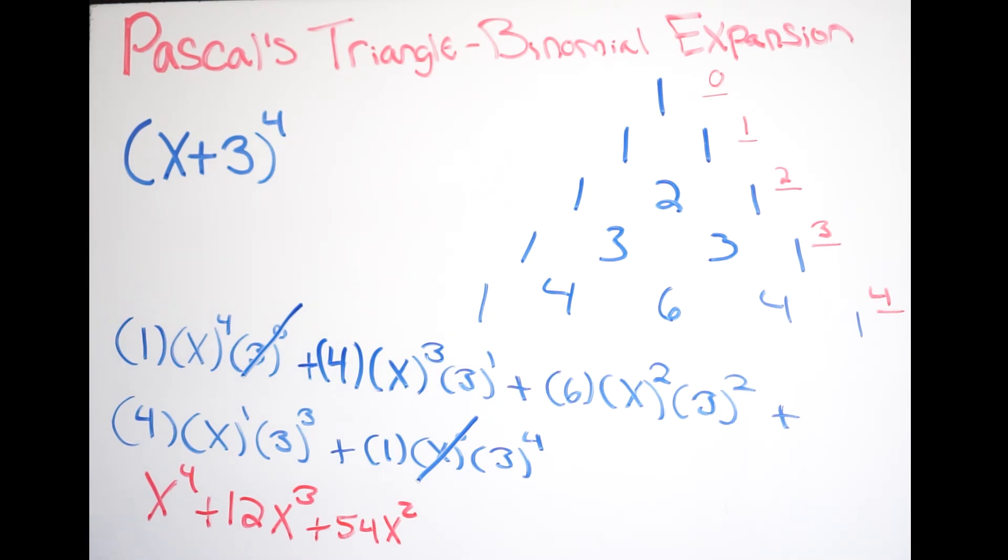Let's keep going. Three to the third. That's going to be twenty-seven. Twenty-seven times four is going to give us a hundred and eight. So we get a hundred and eight x. Right? And then last, we're just going to get three to the fourth power. And when we do that, we just get eighty-one. So plus eighty-one.